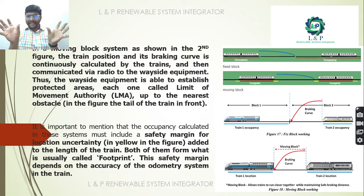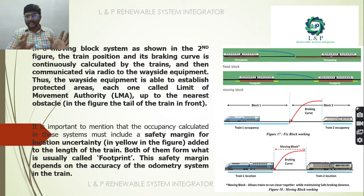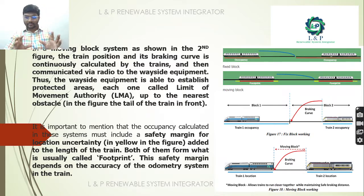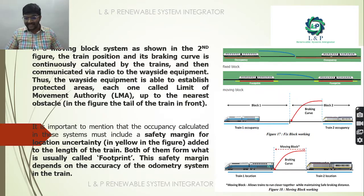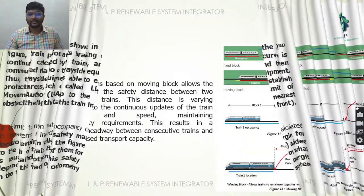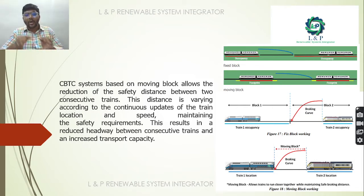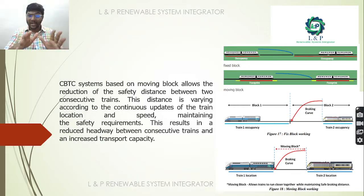In the fixed block system, we determine train occupancy in the track. In the moving block system, we determine the footprints and braking curve, which allows trains to run closer together while maintaining a safe braking distance. The key advantage of the moving block system is maintaining the safest distance between two trains while running.